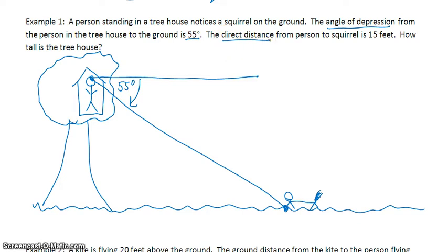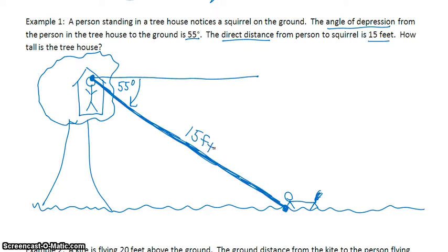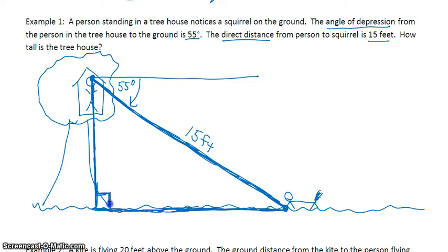The direct distance from the person to the squirrel is 15 feet. Direct distance is directly from the person to the squirrel — in this case, that direct distance is the line of sight, so 15 feet. To solve for how tall the tree house is, we need to create a right angle by dropping a line straight down to the ground and then from that point to the squirrel. We're looking for x, the height of the tree.